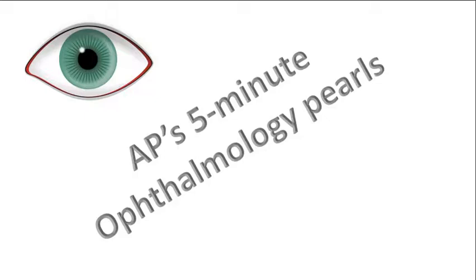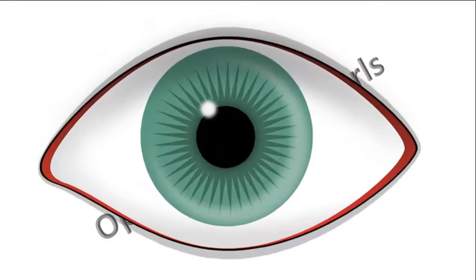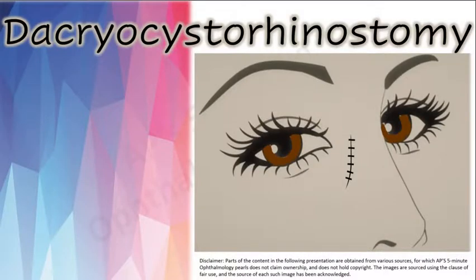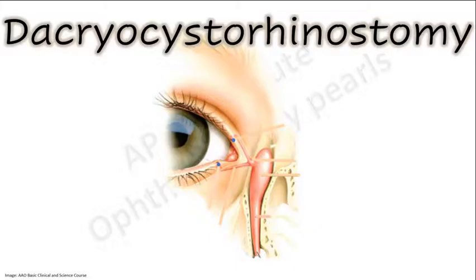Welcome to AP's 5-minute ophthalmology Pulse. Today we will talk about dacryocystorhinostomy, a procedure performed for epiphora due to nasolacrimal duct obstruction. The principle of DCR is to provide an alternative drainage pathway for tears by suturing the lacrimal sac to the nasal mucosa.